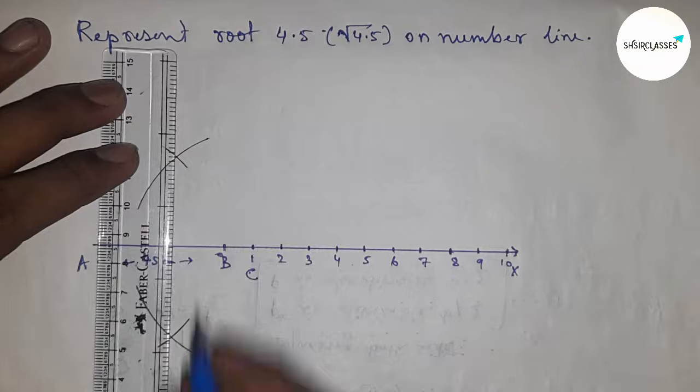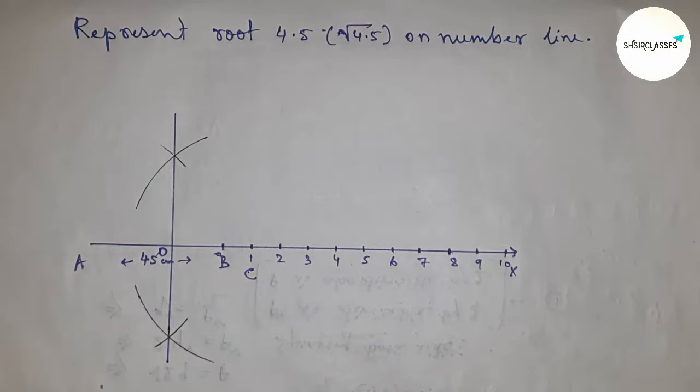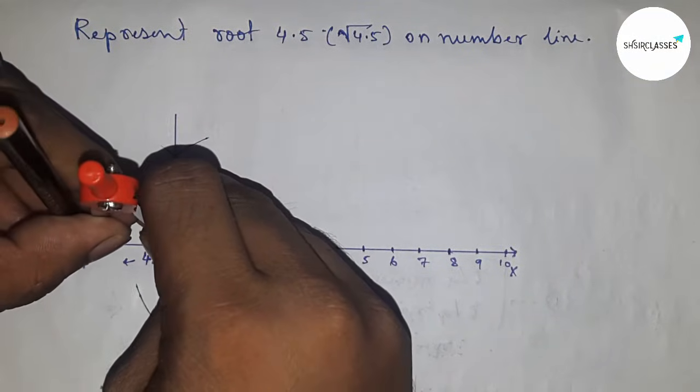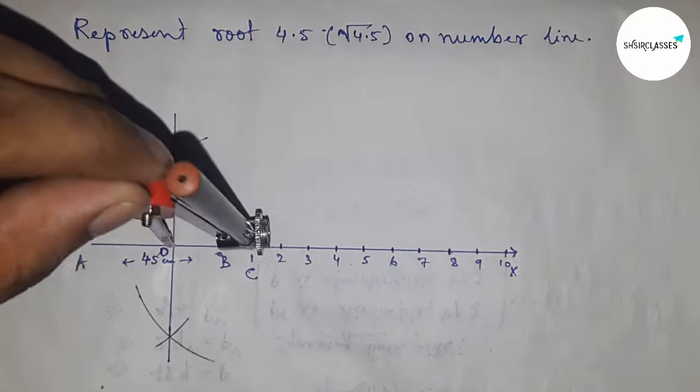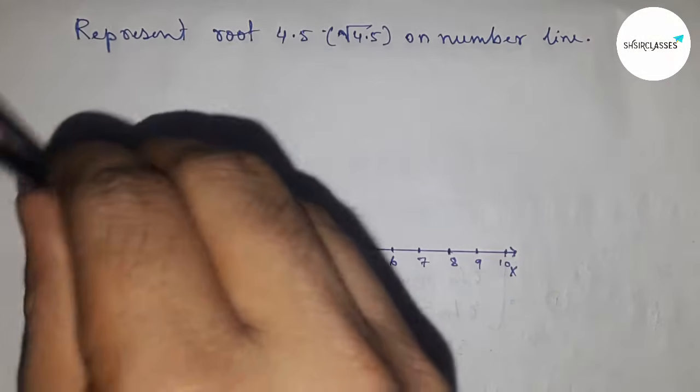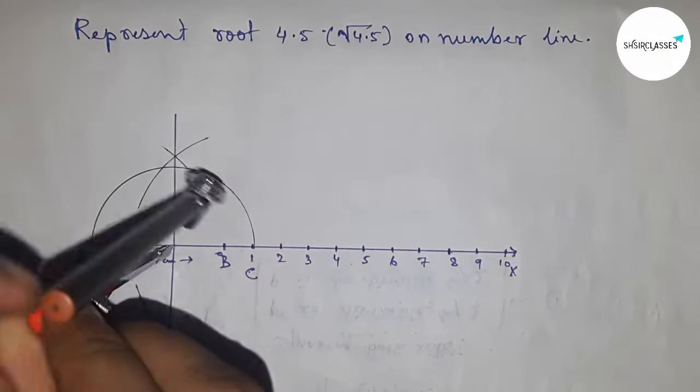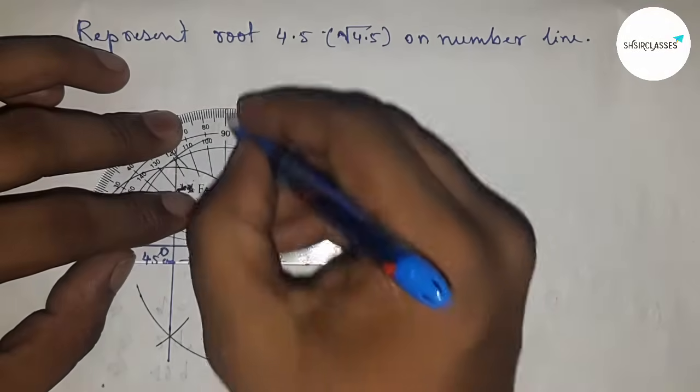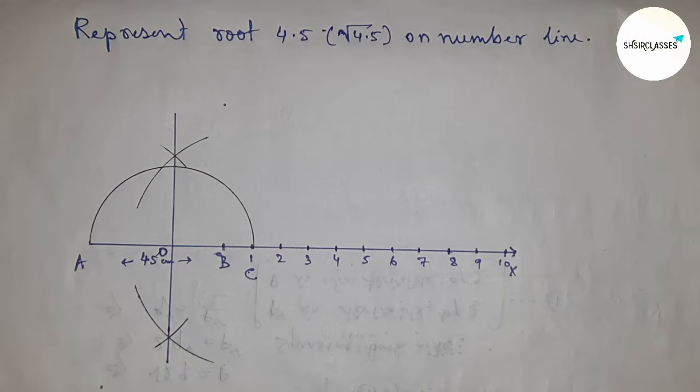Next, join this which bisects at point O. Next, take the length OA and OC to draw a semicircle. So now drawing a semicircle. This is a semicircle.